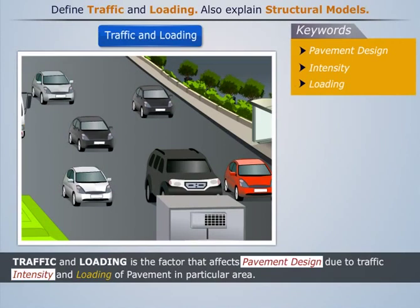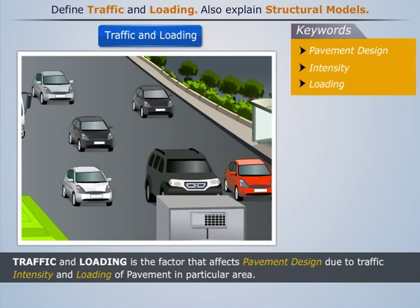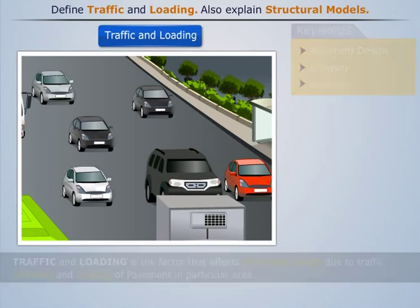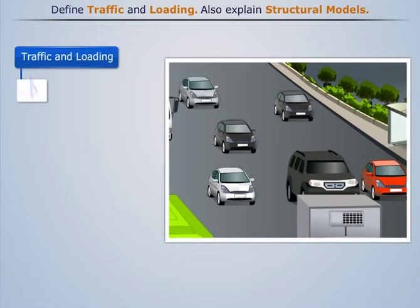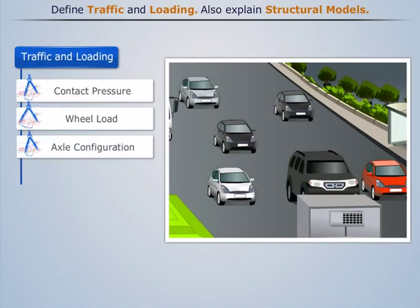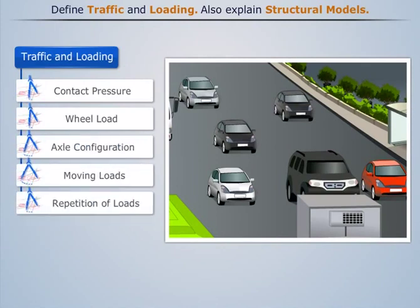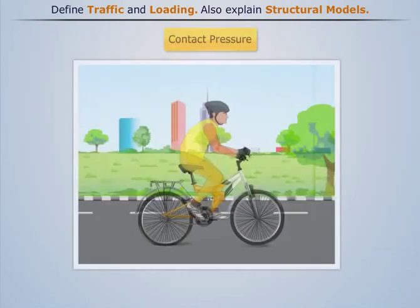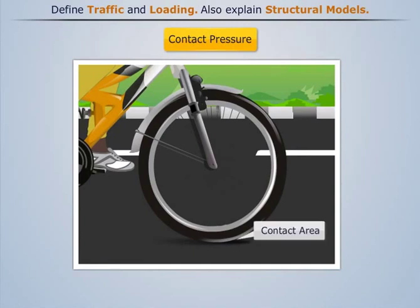Traffic and loading includes the following factors: contact pressure, wheel load, axle configuration, moving loads, and repetition of loads. Let's discuss each one by one. The tire pressure determines the contact area and the contact pressure between the wheel and the pavement surface.